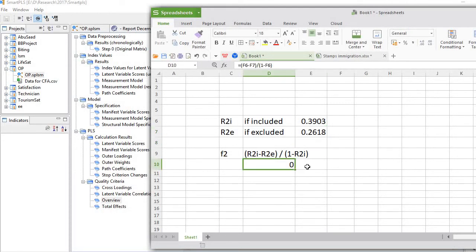So let's calculate it. Here you see R-square included minus R-square excluded, divided by 1 minus R-square included. So this is 0.21.